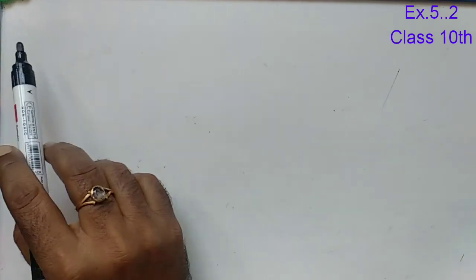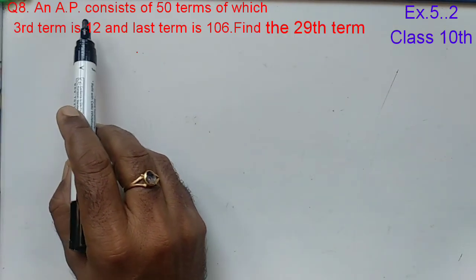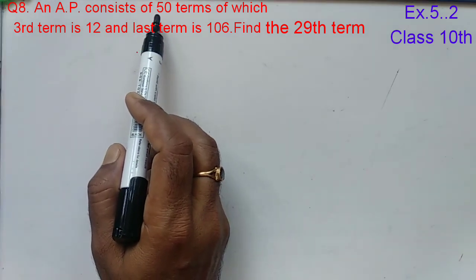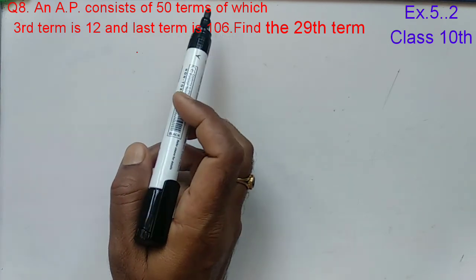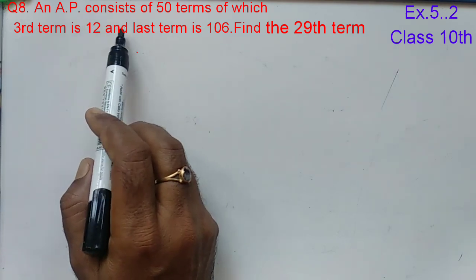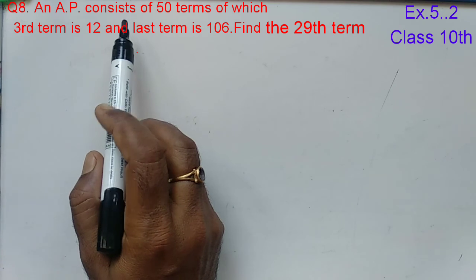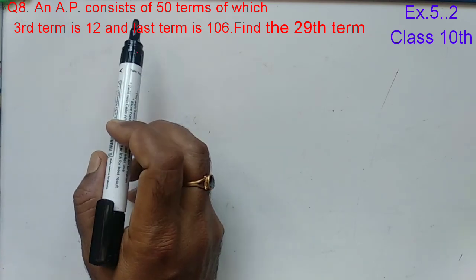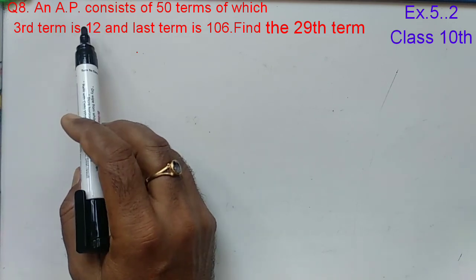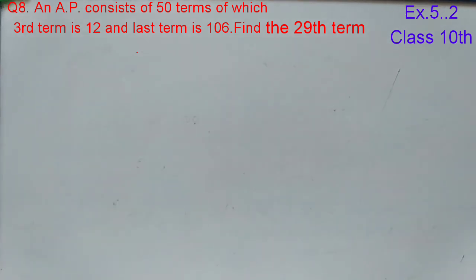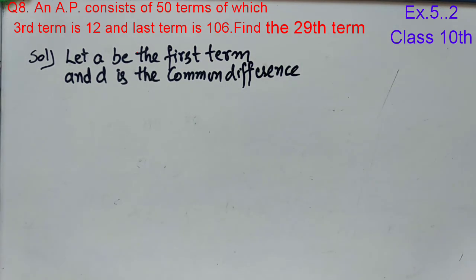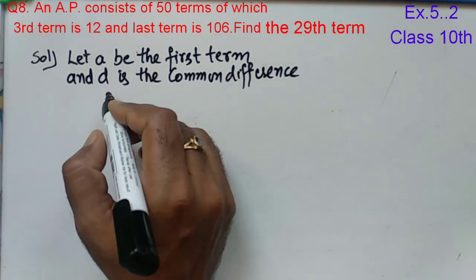Question number 8. An AP consists of 50 terms. The third term is 12 and the last term is 106. Since there are 50 terms, the last term is A50. The third term is 12 and A50 is 106 because we are told the last term. Let A be the first term and D is the common difference. What is given?